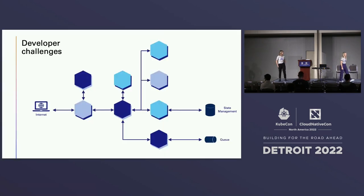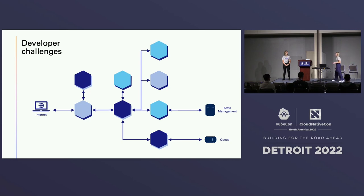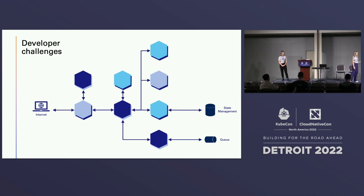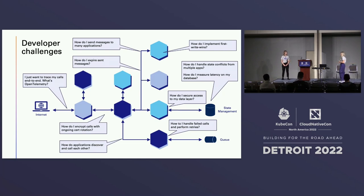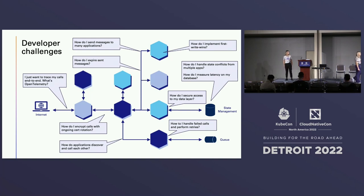We're all here at KubeCon talking about distributed systems and some of the challenges we face as developers and in IT today. Every single person can say they have a different challenge that their dev team faces. Some of the ones we might see commonly are: how do I encrypt my traffic between services? How do I use distributed tracing all the way through to my infrastructure? How do I do consistent retries on my apps if there's network latency or transient failure? These are a few of the things that were the reason behind the Dapr project.